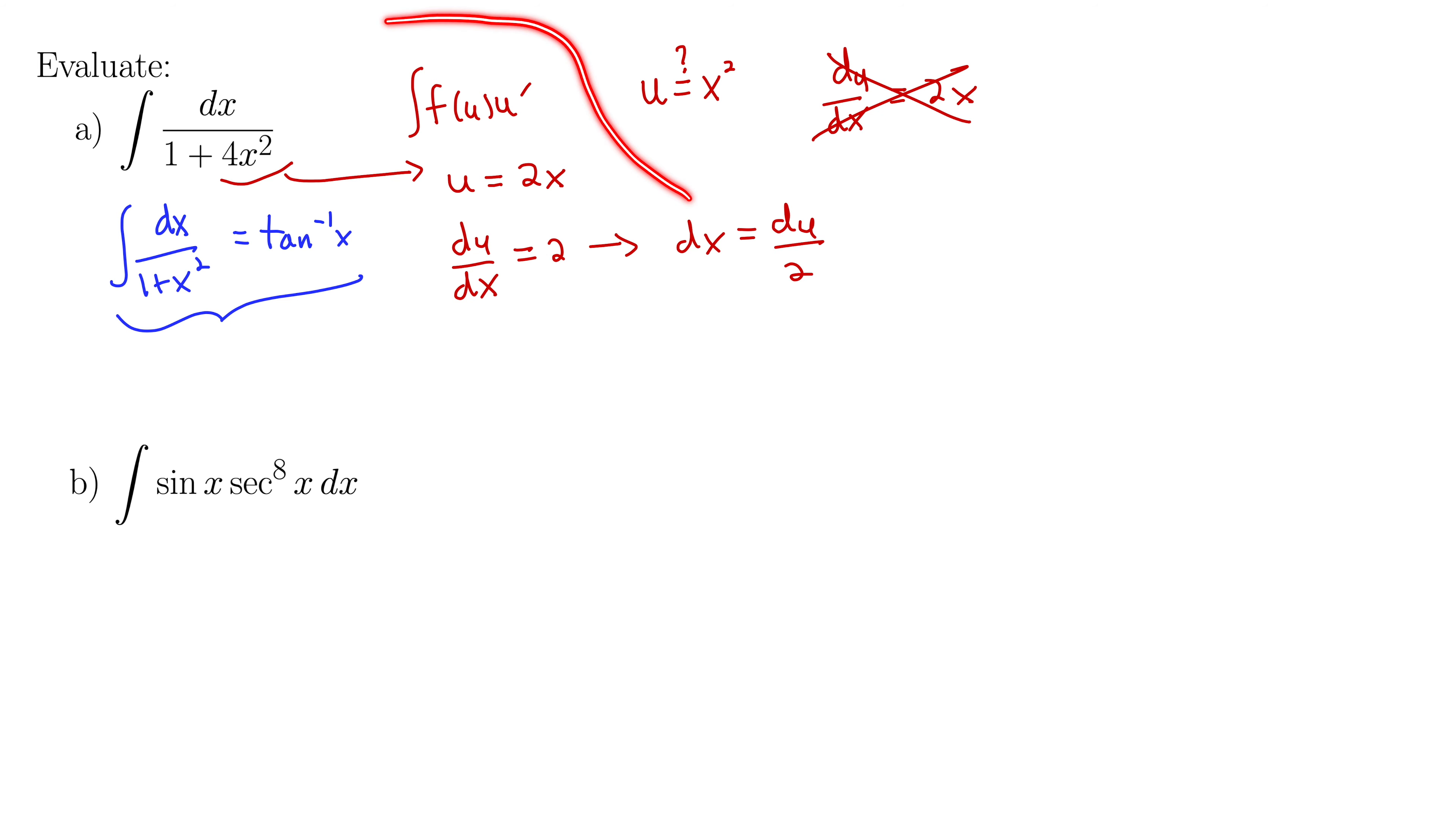Now I plug this dx in up here up top, so our integral becomes the integral of du over 2. So this 1 half will come out to the front here, and then 1 plus u squared. Because if u is 2x, then u squared must be 4x squared.